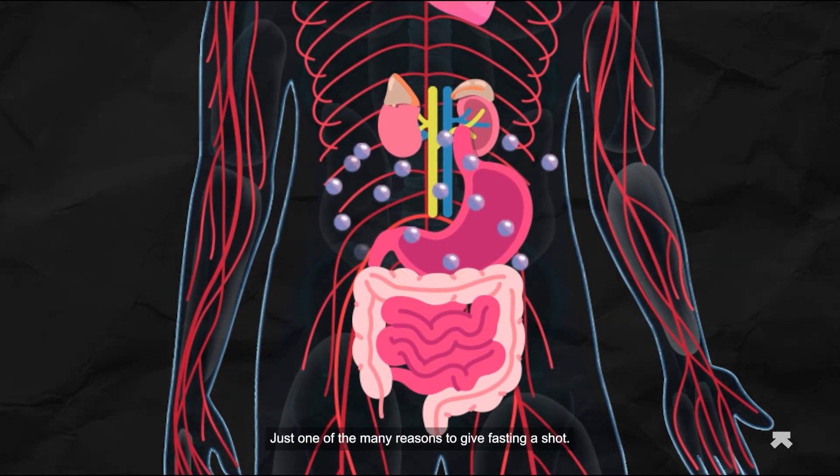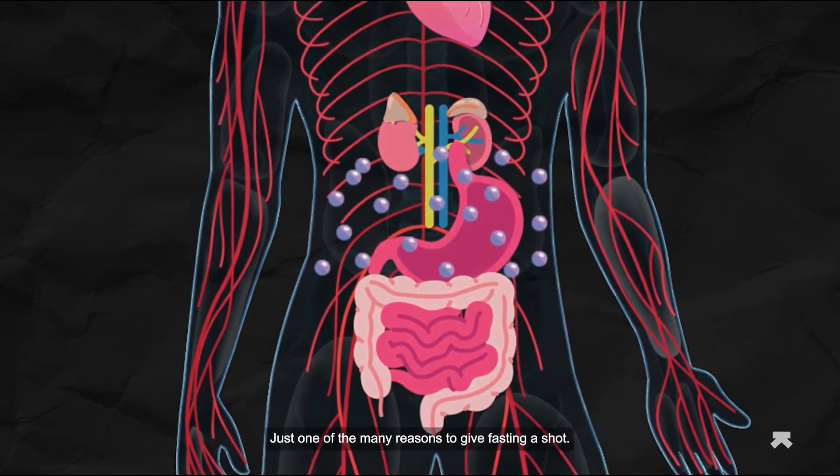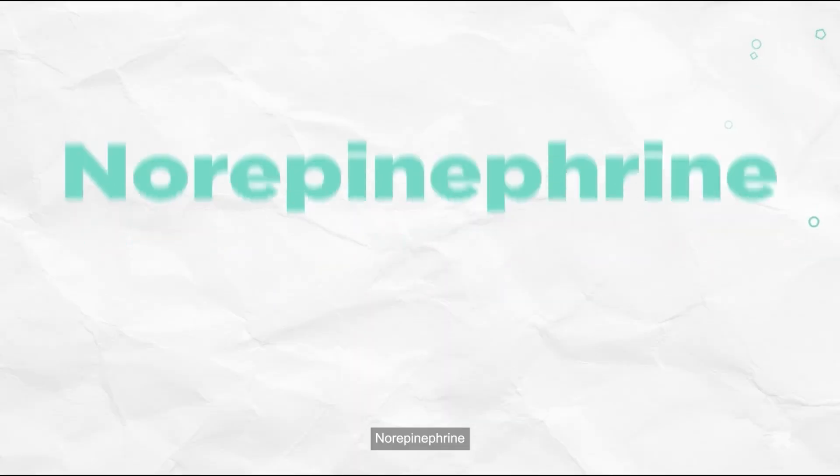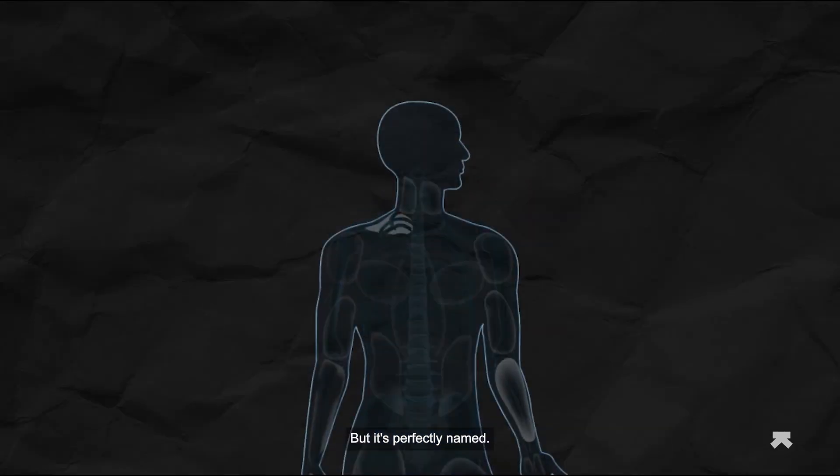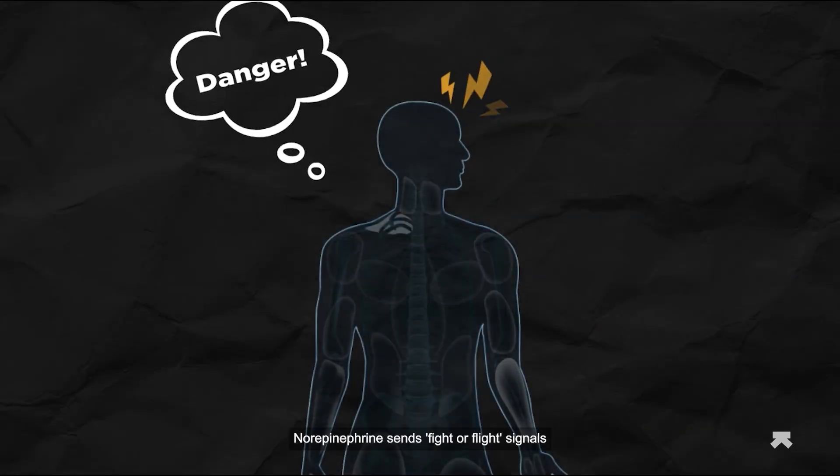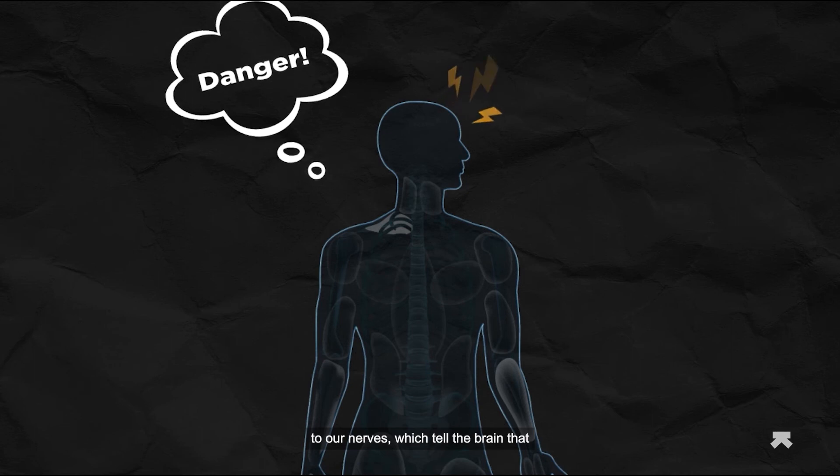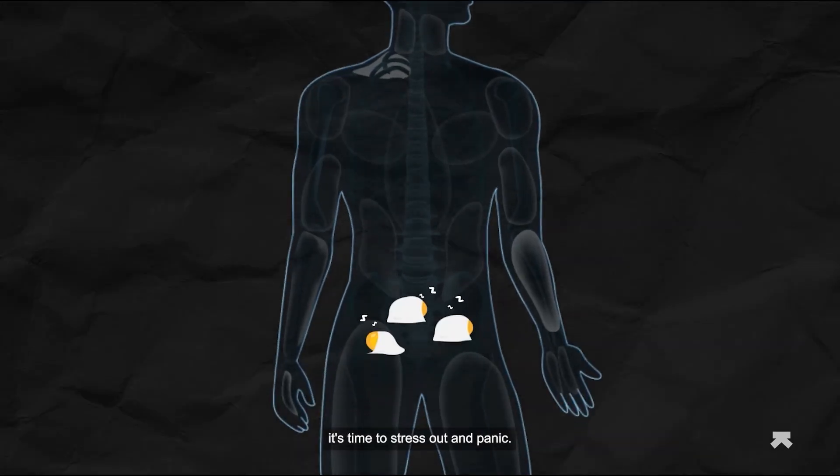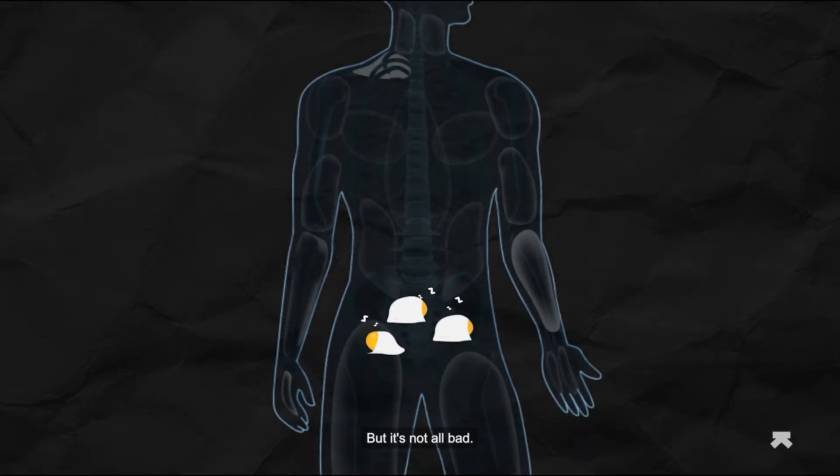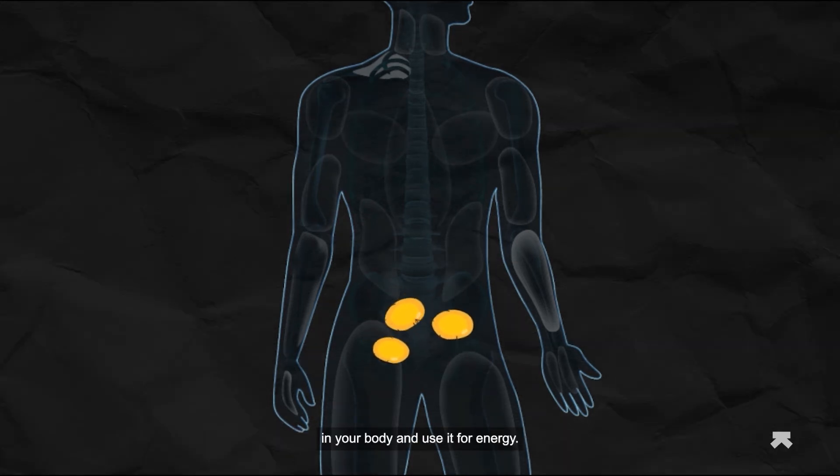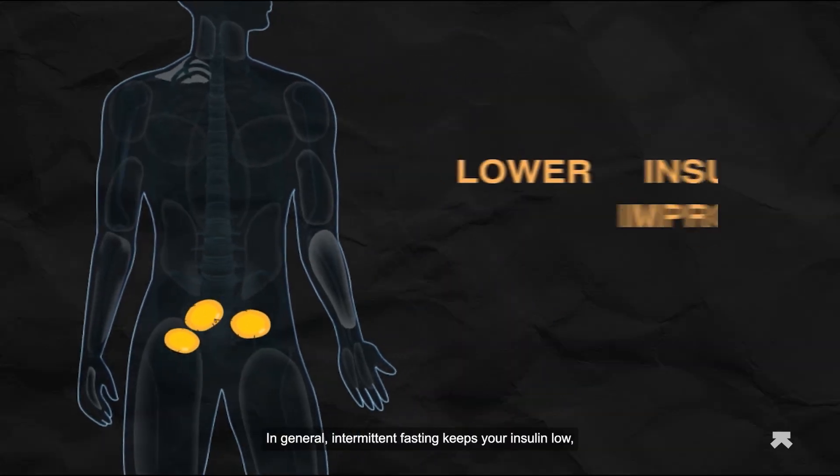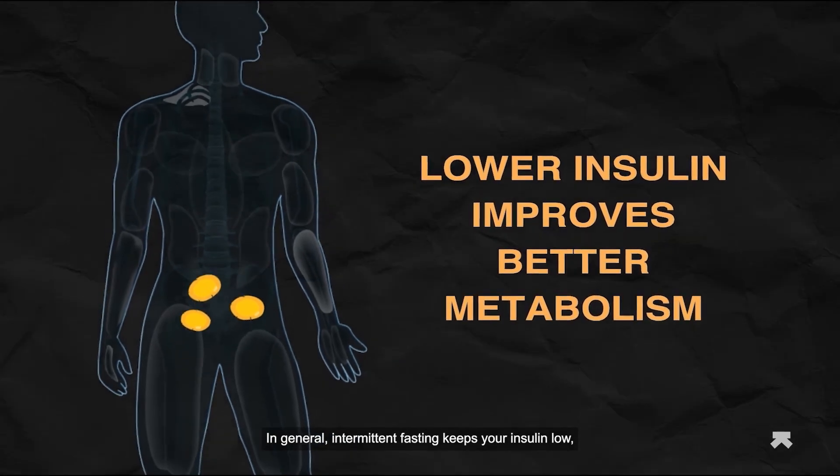Norepinephrine: This hormone may be stressful to pronounce, but it's perfectly named. Norepinephrine sends fight-or-flight signals to our nerves, which tell the brain that it's time to stress out and panic. But it's not all bad - this hormone can help wake up the fat sleeping in your body and use it for energy. In general, intermittent fasting keeps your insulin low, which is great for your metabolism.